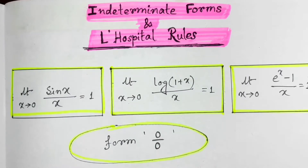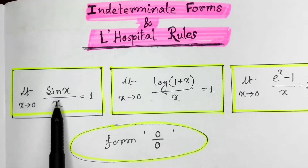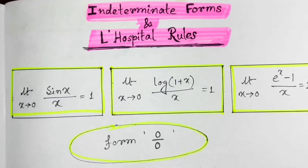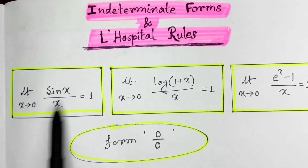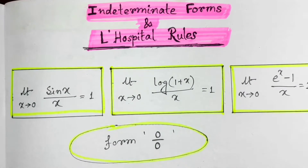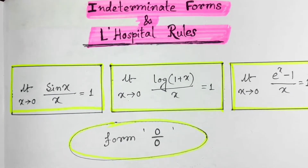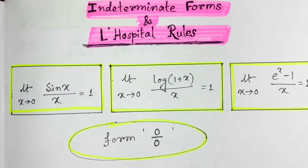So first of all, how do we identify that a function is in indeterminate form? You write the function in denominator and numerator format. If we take the limiting value individually for the denominator and numerator functions, and we find that both limiting values are 0, then we say the function is in indeterminate form — specifically in the form of 0 by 0.